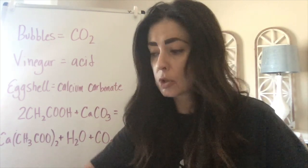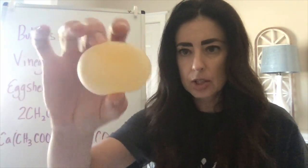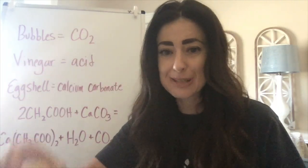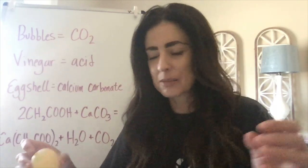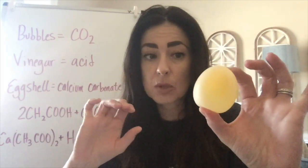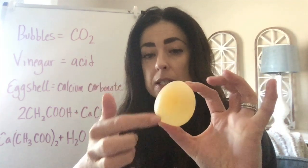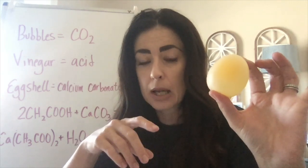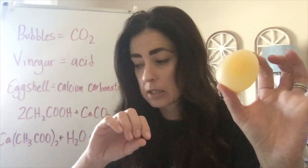Here's the egg without the shell — it's squishy, it's almost like a bouncy ball. It actually does bounce if you want to try that. The part that's left is called the membrane. So under the eggshell is a membrane, and then you have the egg white and the egg yolk inside.